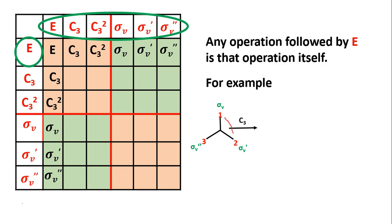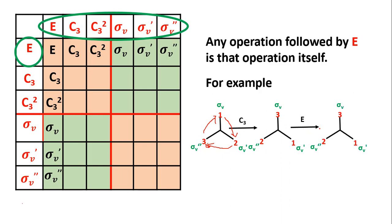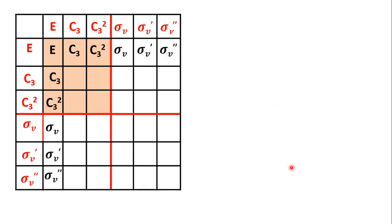The item at position 1 will move to position 2, position 2 moves to position 3, and position 3 moves to position 1. E is the operation of doing nothing, so you get the same arrangement — together these represent C3. Now, C3 followed by C3 is 120 plus 120 equals 240 degrees, giving C3 square. So C3 on the top and C3 on the side will be C3 square.